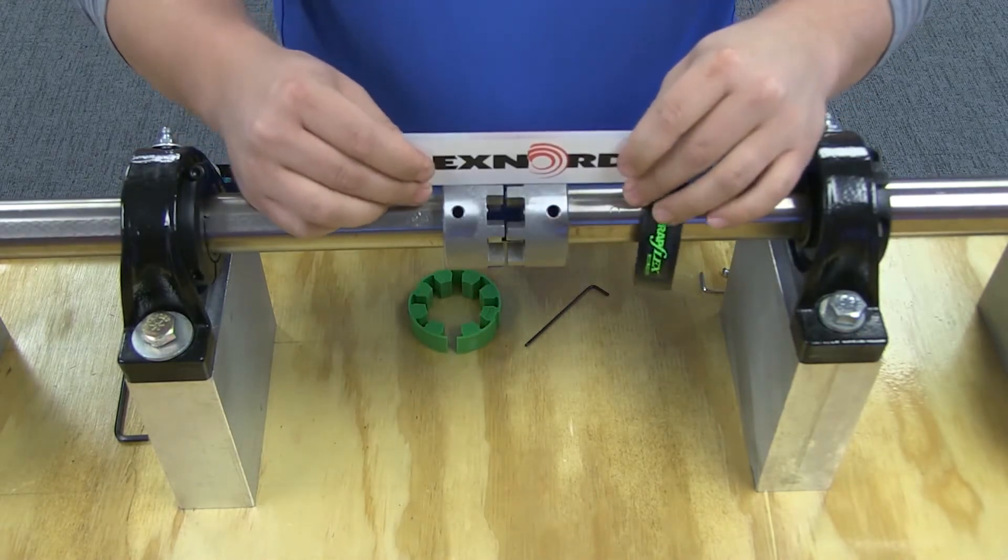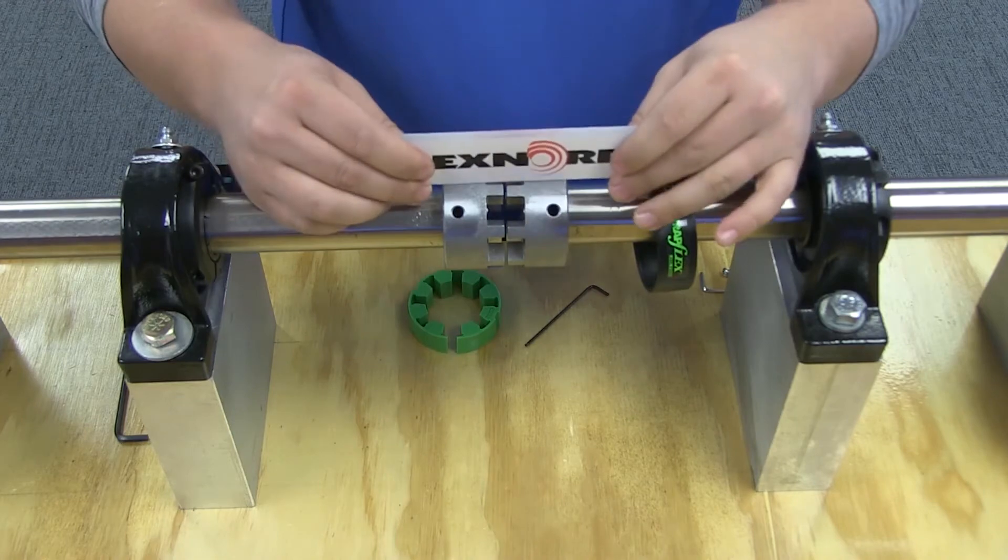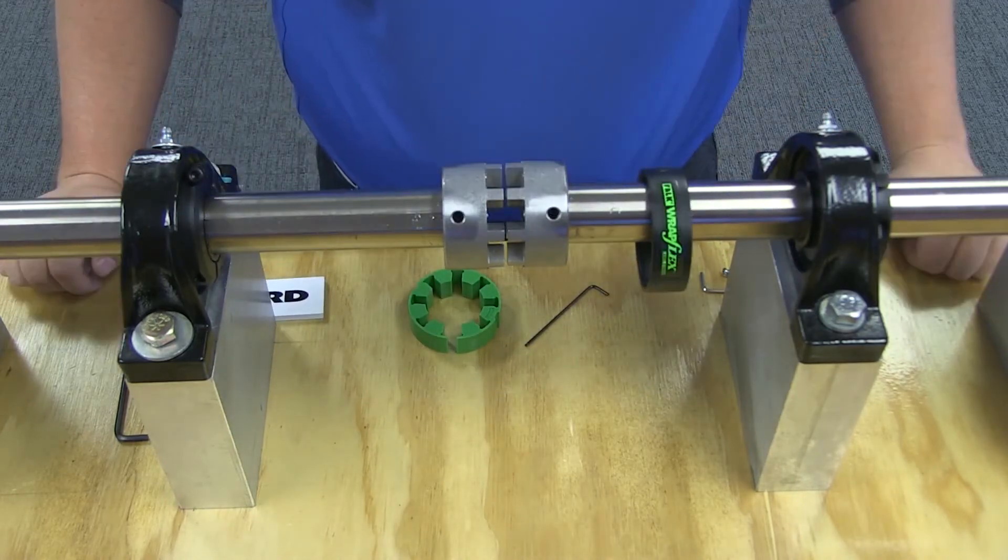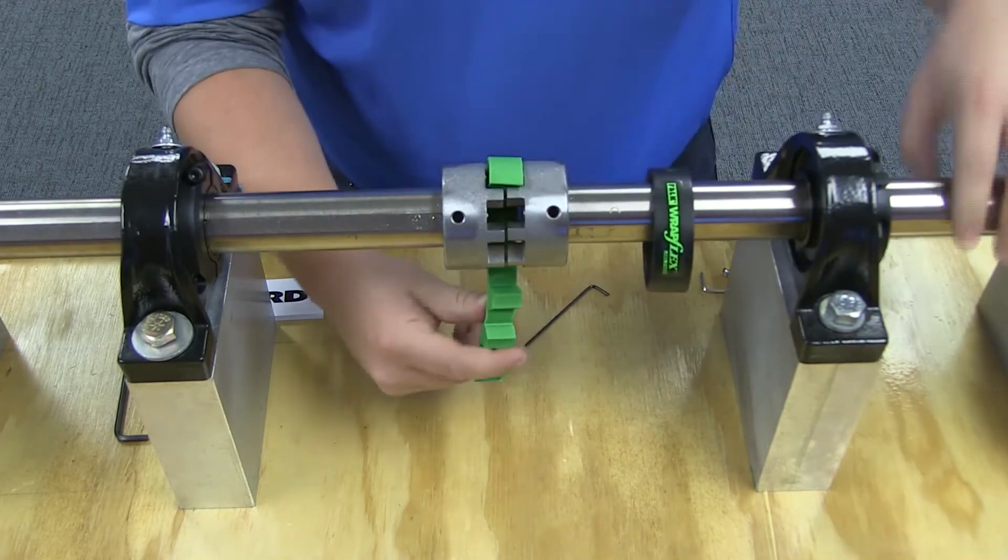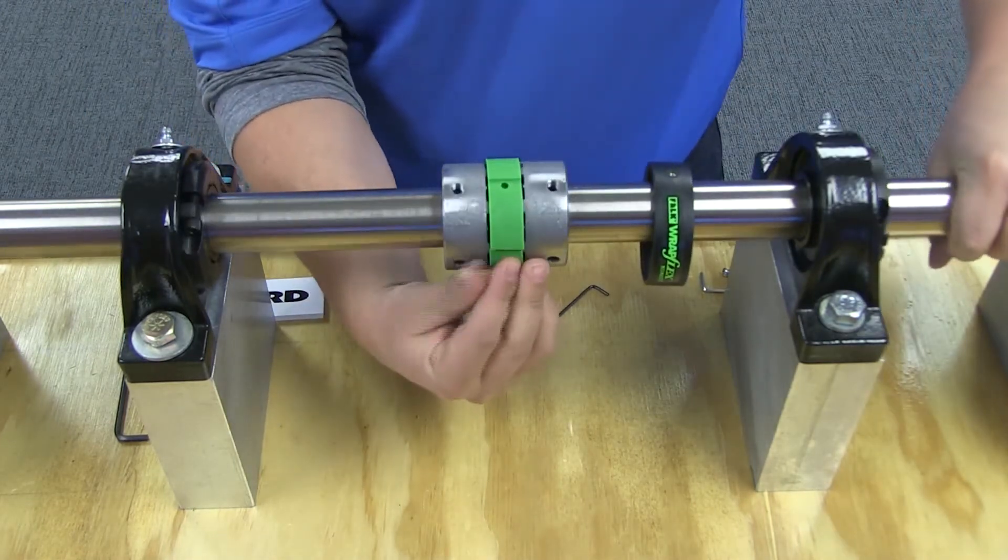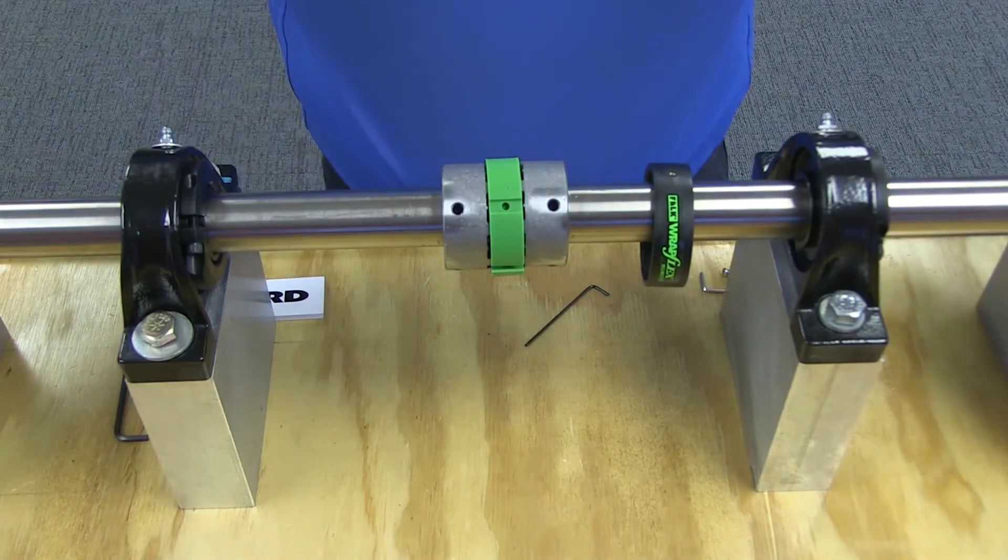By minimizing misalignment, you are ensuring optimal performance of your coupling and your connected equipment. To install the element, rotate one hub so that the teeth of both hubs are aligned axially. Spread apart the element so that it will fit over the hub teeth and wrap the element between the two hubs.